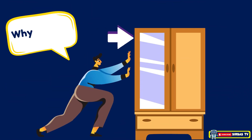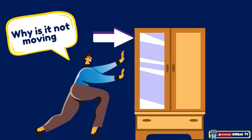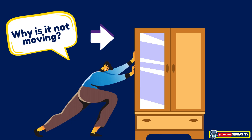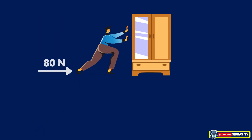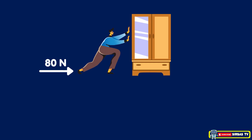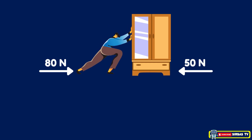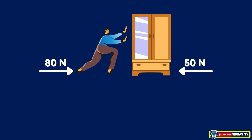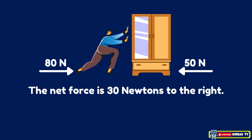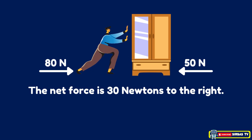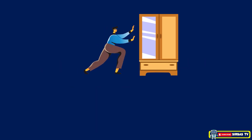Let's go back to that heavy cabinet. This time you push harder, applying 80 Newtons of force to the right, but friction only pushes back with 50 Newtons to the left. Net force equals 80 Newtons minus 50 Newtons — that's 30 Newtons to the right. Since there is an unbalanced force, the cabinet starts to move.